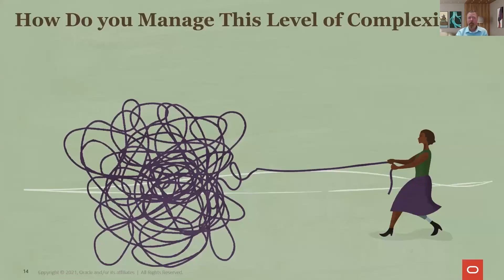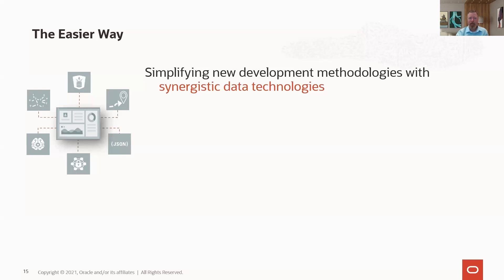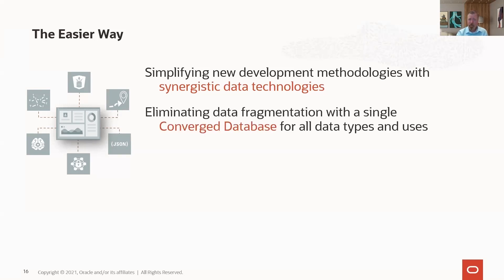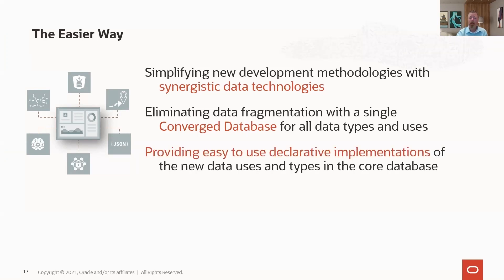How can we deal with that level of fragmentation? At Oracle, we believe there is an easier way. We built on a singular platform — the idea is to create synergetic data technologies that work together. We ask: can we pull all these single-purpose databases together and tie it in with our very reliable Oracle database? We want to eliminate the data fragmentation, converge all those data types and workloads, and accommodate them in a converged database with an easy-to-use, unified API.